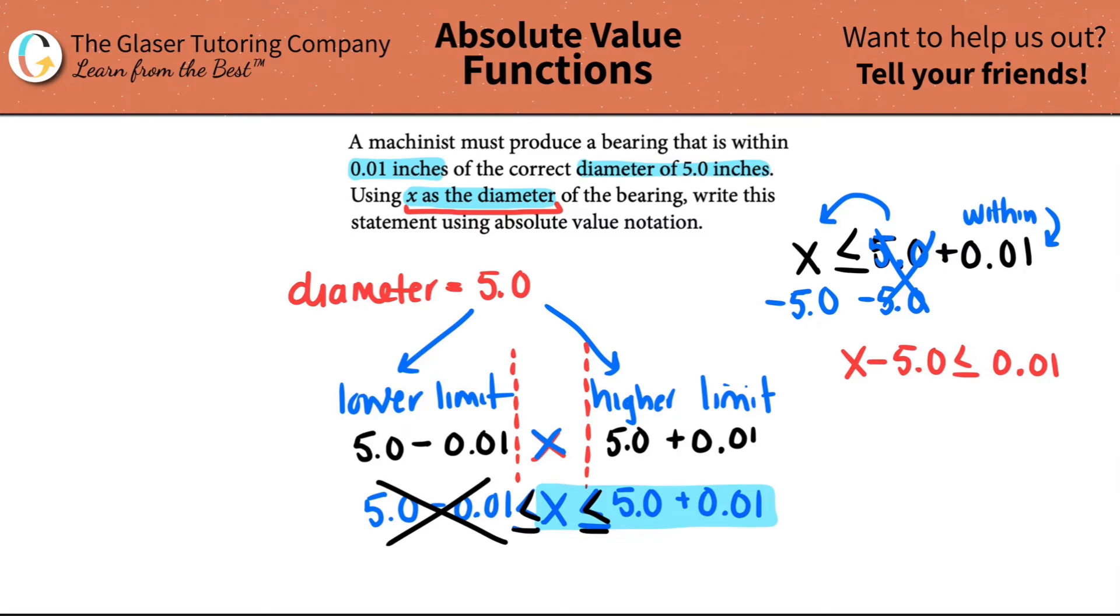And now all we have to do is just strap on the absolute value sign, and you always strap it on where your x value is. And there you go. So by doing that, by putting that absolute value sign, you are incorporating the lower limit and the higher limit.